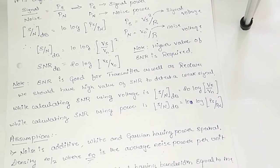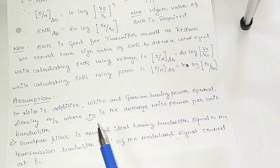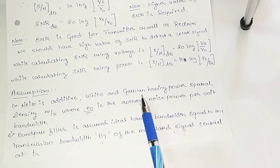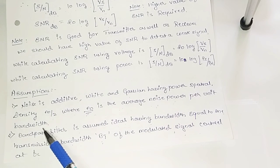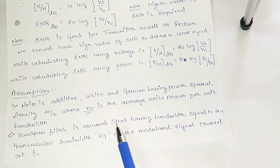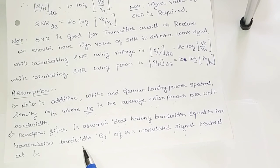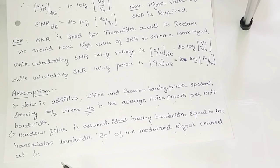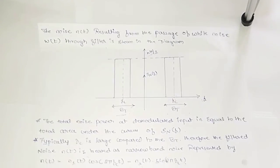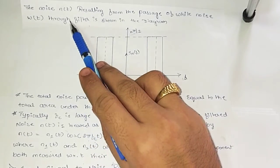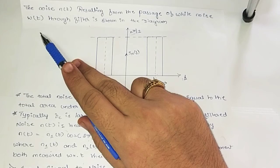Now there are some assumptions regarding SNR. Noise is additive, white and Gaussian, having power spectral density N0/2, where N0 is the average noise power per unit bandwidth. The band pass filter is assumed ideal, having bandwidth equal to the transmission bandwidth Bt of the modulated signal, centered at fc. The noise N(t) resulting from the passage of white noise W(t) through the filter is shown in the diagram.